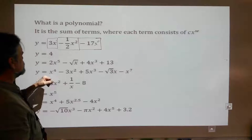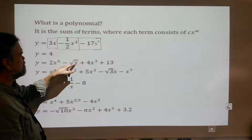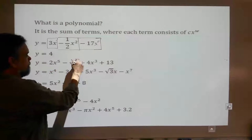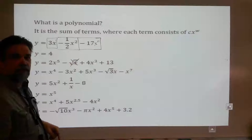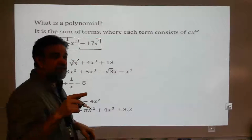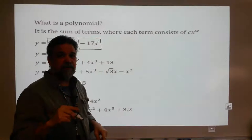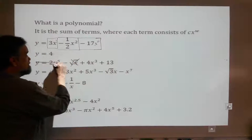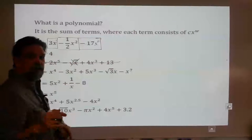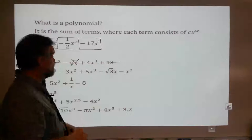Is this a polynomial? We have 2x to the 5th minus the square root of x — whoa, no. The square root of x is actually x to the one-half power, and that's not a whole number, so this is not a polynomial. If one term doesn't make it, the whole thing doesn't make it.